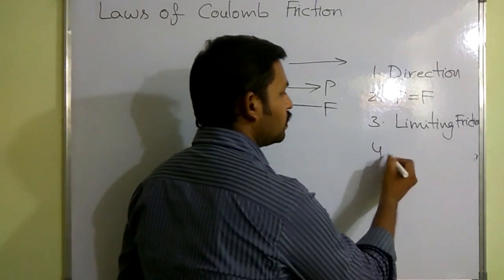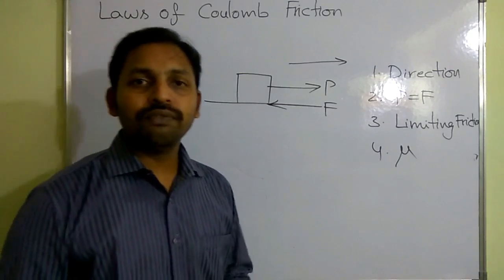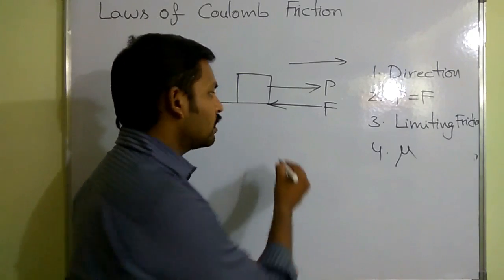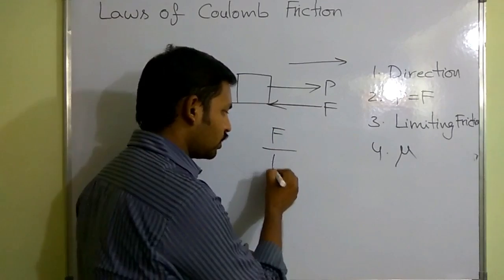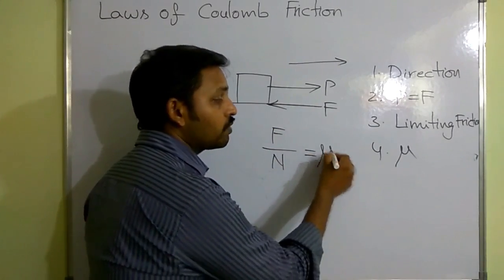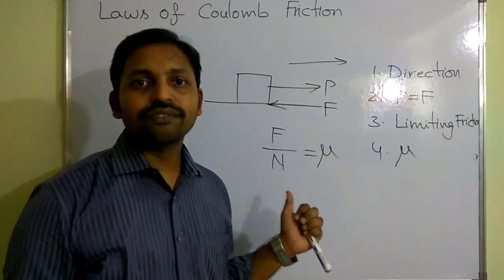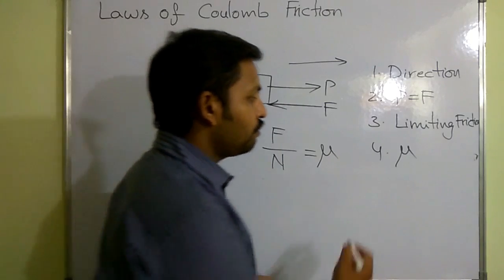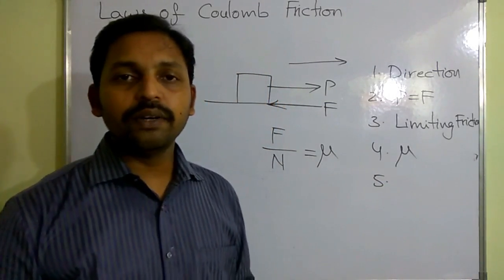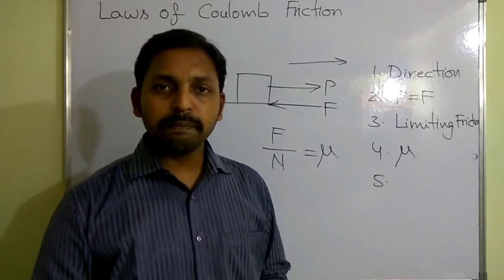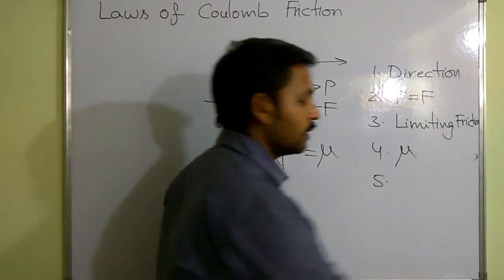The fourth law is about the coefficient of friction — the frictional force always bears a constant ratio to the normal reaction, which is nothing but the coefficient of friction. The fifth law is that frictional force is independent of shape, size, and area of contact. Let's see that.